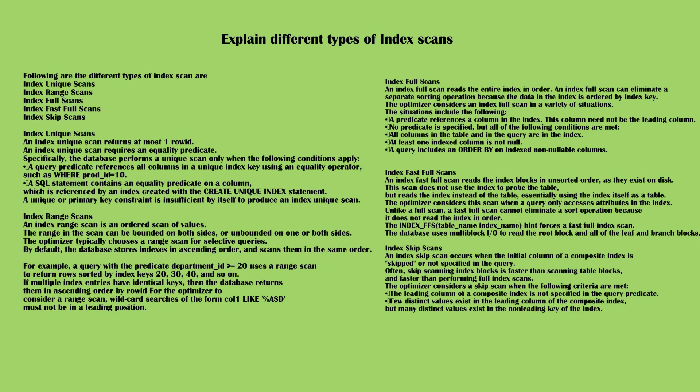Index range scans: an index range scan is an ordered scan of values. The range in the scan can be bounded on both sides or unbounded on one or both sides. The optimizer typically chooses a range scan for selective queries. By default, the database stores indexes in ascending order and scans them in the same order.